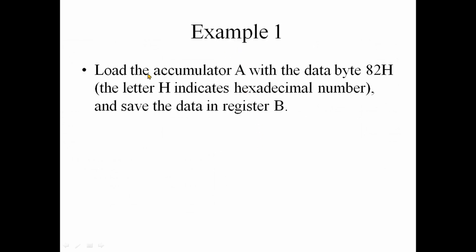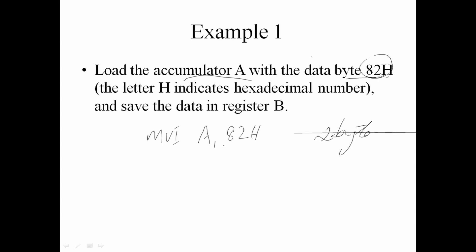For example: load the accumulator A with 82H. 82H is the data. The correct instruction is MVI — MVI A, 82H. This uses a 2-byte instruction because we move accumulator A with the immediate data 82H.